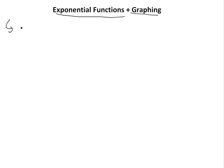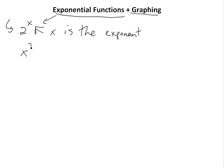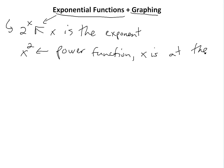Exponential is not to be mistaken with a power function. This is an example of an exponential because the x is the exponent. Don't be mistaken — if you have x to the 2, this is a power function, because the x is at the base. So yeah, they're just not to be confused.